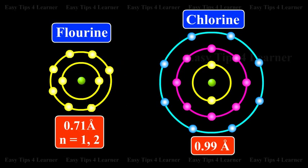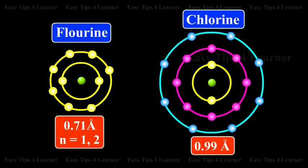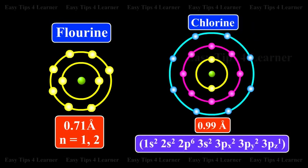Fluorine (9F): N = 1, 2 — configuration 1S2, 2S2, 2PX2, 2PY2, 2PZ1. The chlorine atom (0.99 Angstrom) has 3 shells with configuration 1S2, 2S2, 2P6, 3S2, 3PX2, 3PY2, 3PZ1.